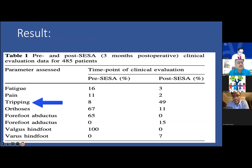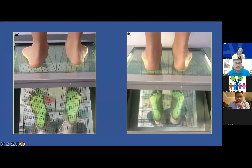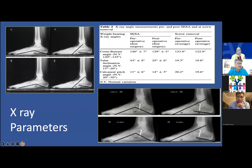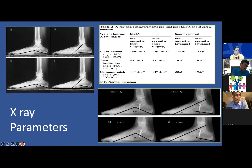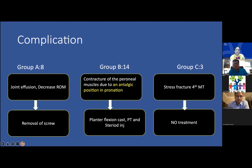Results at three months postoperatively showed a substantial increase in the arch appearance. Clinically, a well-developed arch was noted post screw placement. Radiologically, the Costa-Bartani angle and talus inclination angle were significantly improved, and calcaneal pitch improved over time as these two parameters normalized. Complications included joint effusion and decreased range of motion requiring screw removal, peroneal muscle contracture in 14 patients managed with physiotherapy or steroid injection, and three patients with stress fractures of the fourth metatarsal — likely healed incidental findings, requiring no treatment.